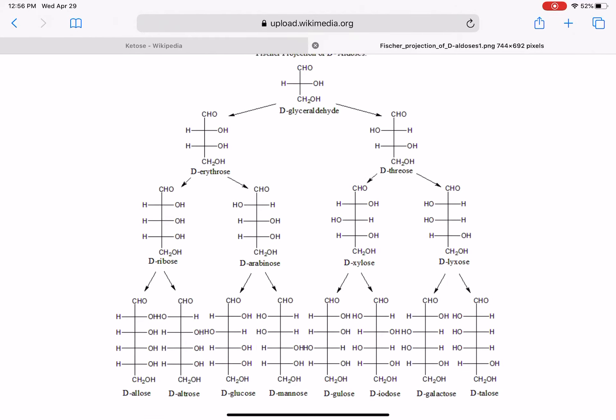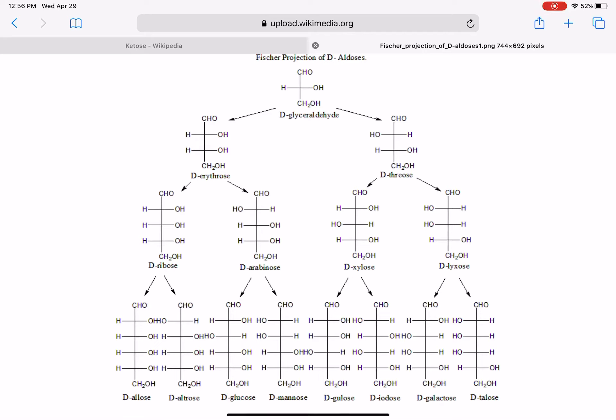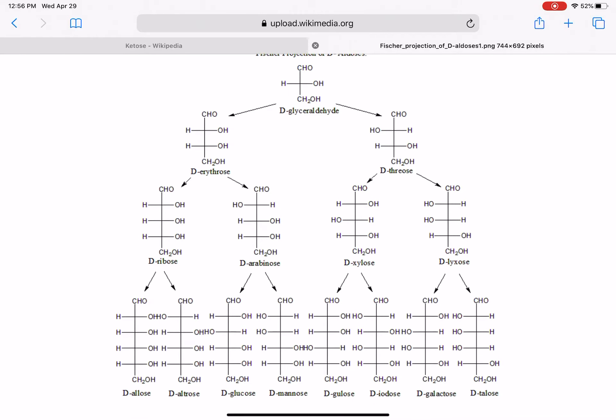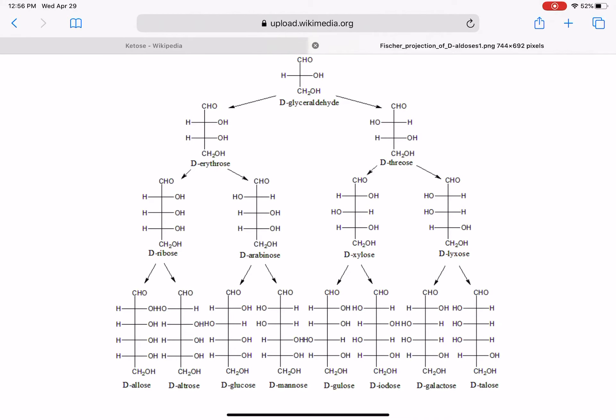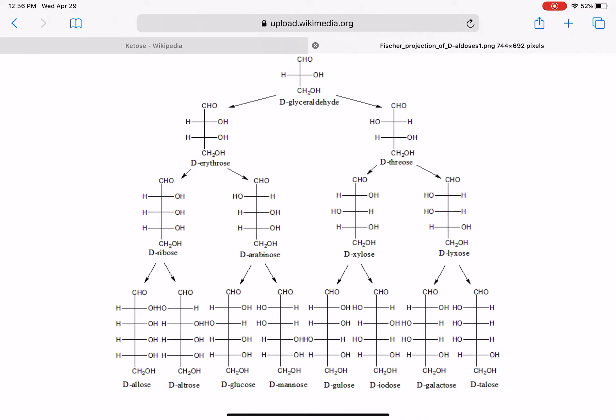And they're all being drawn with the condensed CHO notation instead of drawing out the aldehyde group, which I already talked about. And so what you're going to do here is look for the correct number of carbon atoms, first of all. And six carbon atoms is down in the very bottom row. And then you just are going to find the structure that has the same pattern of H and OH. Our pattern of OHs was right, left, right, right.